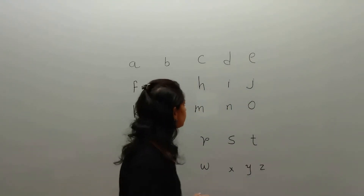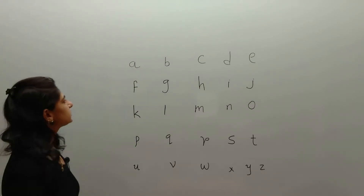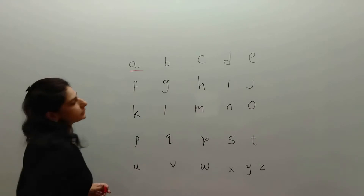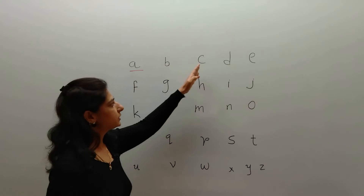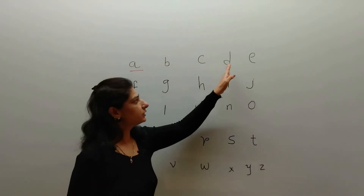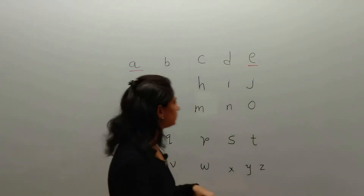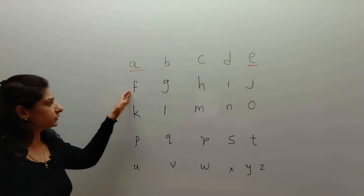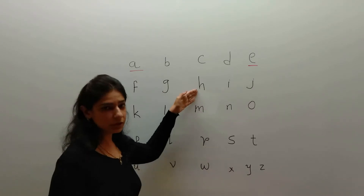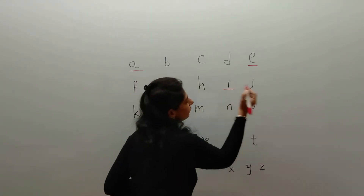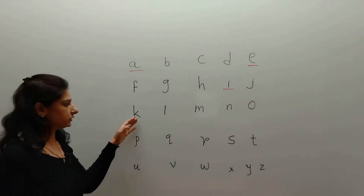A is a vowel — the first letter. B is a consonant. C is a consonant. D is a consonant. E is a vowel. F is a consonant. G is a consonant. H is a consonant. I is another vowel. J is a consonant. K is a consonant.